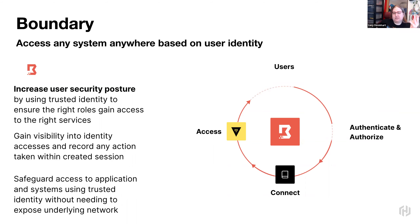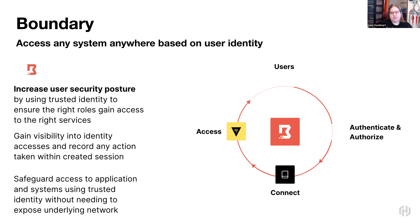Upon logging into Boundary, a user is presented with a pre-selected list of all the applications and hosts available for them to access. This host catalogue can be populated automatically through service discovery with integrations with AWS and Azure, for example, freeing administrators from the manual overhead of constantly updating access lists. The other option for admins is using the Boundary API or perhaps Terraform to configure that service catalogue — tying in with Consul where Consul is that service catalogue, so every time Consul gets updated, Terraform will then update Boundary.